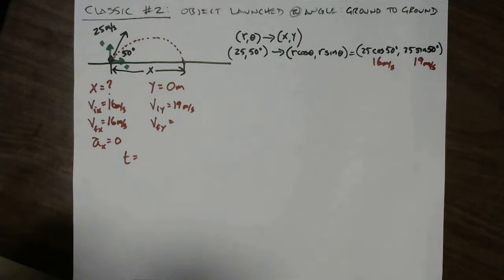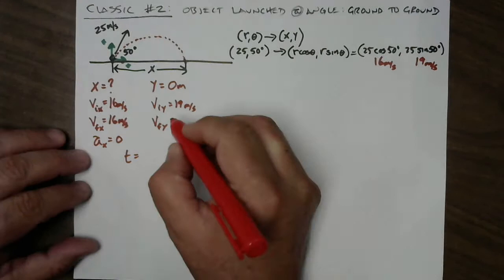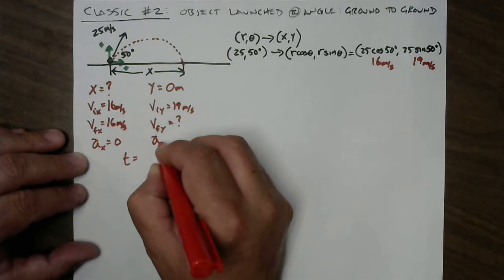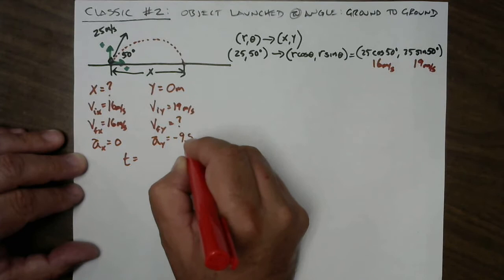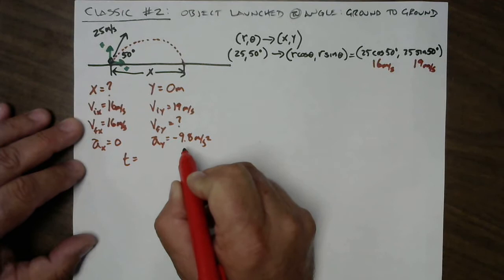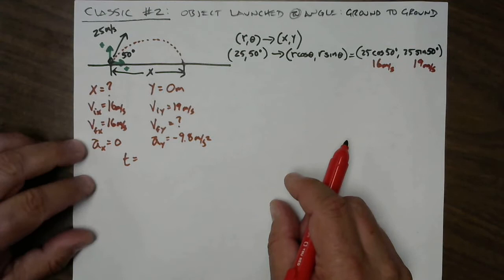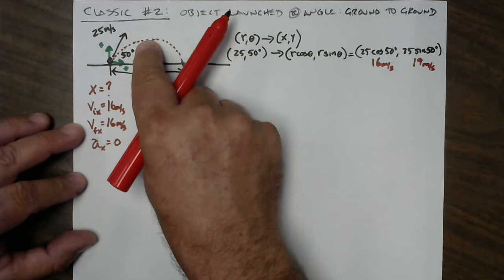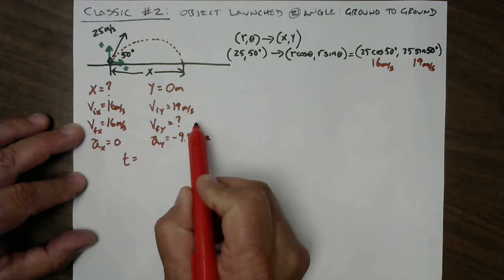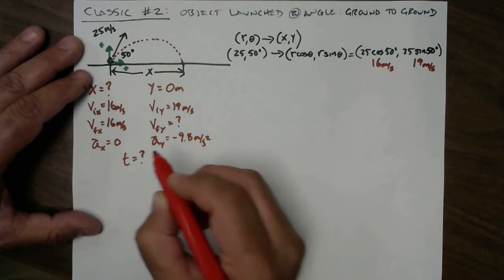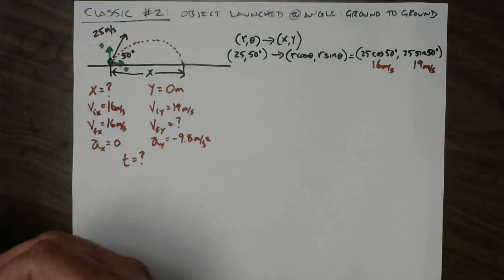For vf_y we just don't know — we'll deal with that later. The acceleration in y is negative 9.8 m/s². Gravity is doing the accelerating in the y direction, and it's negative because I chose up as positive. That acceleration will reduce the initial 19 m/s down to zero by the time we reach the top, and then create a negative velocity on the way down — so whatever vf_y is, it will be a negative number. And time we don't know. There is the complete list of knowns and unknowns.